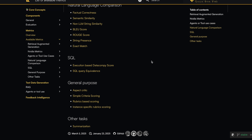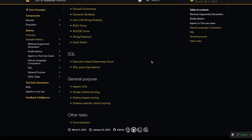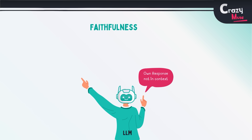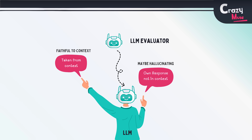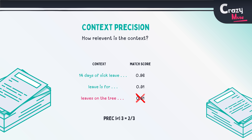Let's look at a few. Faithfulness measures how accurately the answer reflects the provided context. A score of 100% means the answer is entirely based on the context, while 0% means it isn't. This metric relies on LLMs, so it can be slower in practice.